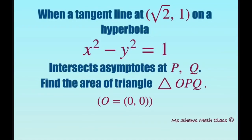Hi everyone! When a tangent line at (√2, 1) on a hyperbola x² - y² = 1 intersects the asymptotes at points P and Q, we're going to find the area of triangle OPQ, where O is the origin.